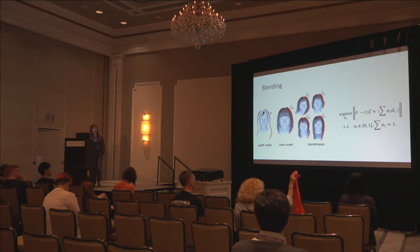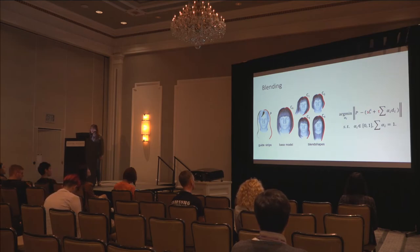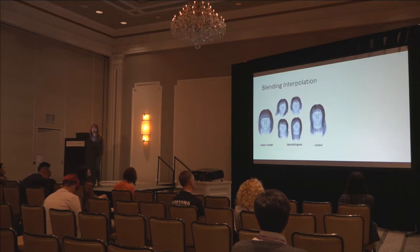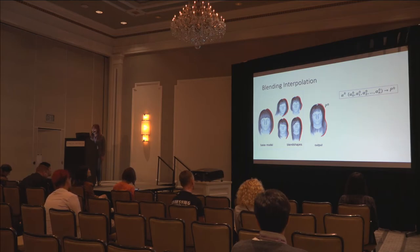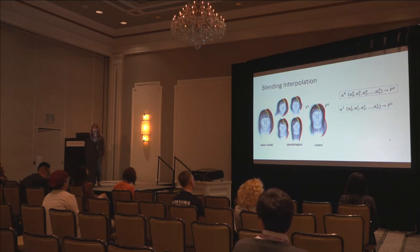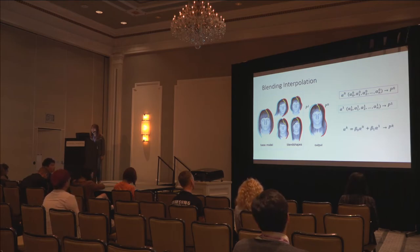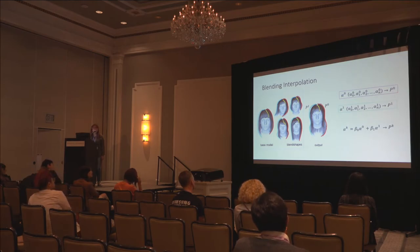Now we have blending weights for all the guide strips. To get blending weights for the rest of the strips, we use blending interpolation. For example, given the red and blue strips with their blending weights alpha_0 and alpha_1, for a novel yellow strip, we simply interpolate the blending weights using the nearest two strips. The interpolation weights beta_0 and beta_1 are computed by estimating the distance between different strips.